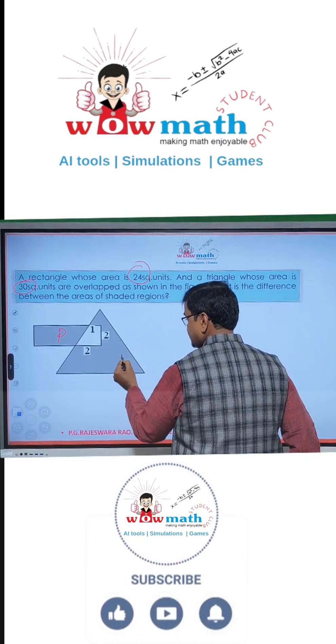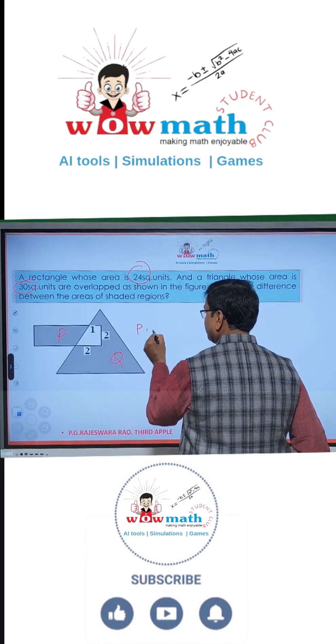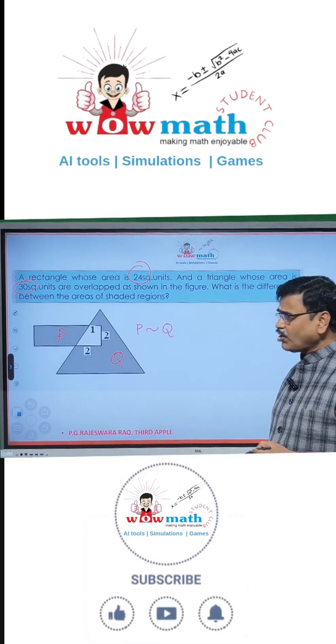Let us assume this region is P, this region is Q. He is asking what is the difference between P and Q. That means P minus Q or Q minus P, whatever is bigger. So how to do this?